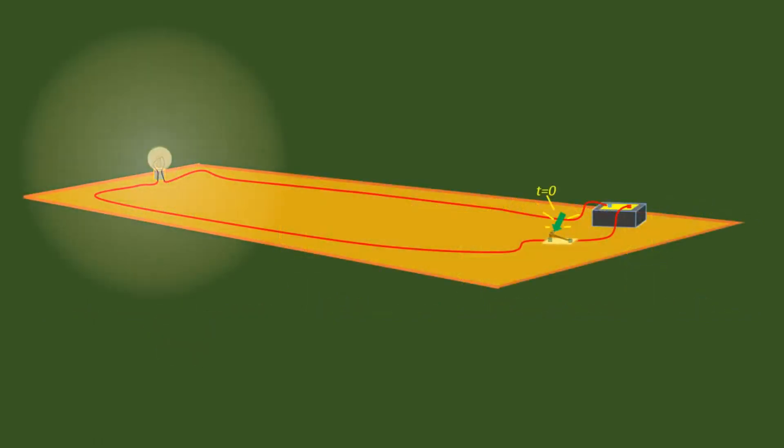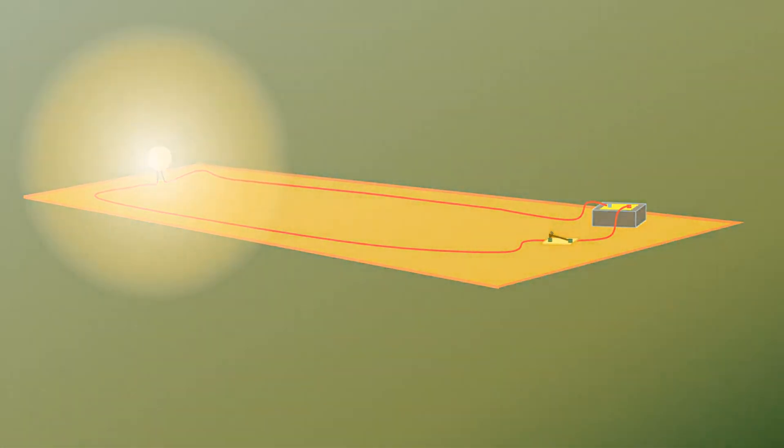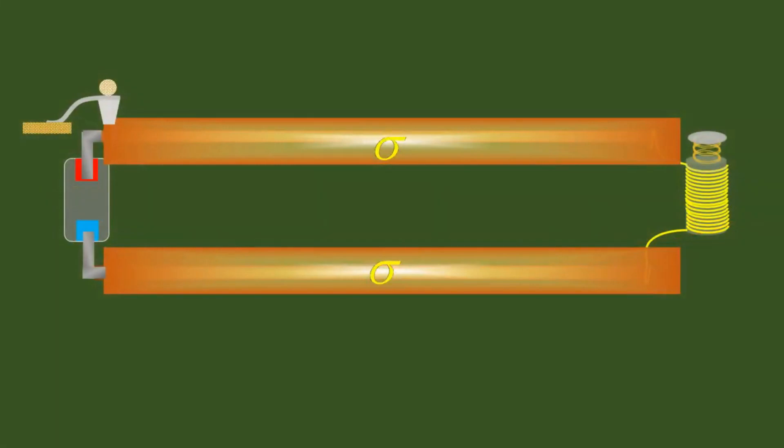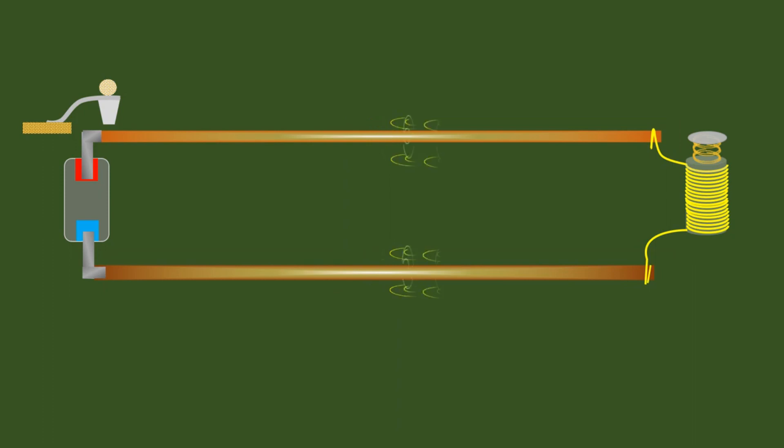We still do not answer the initial question, how does the energy reach the load in an electrical circuit? By an electromagnetic wave or by some other mechanism? If the propagation is carried out by an electromagnetic wave, does this wave advance through the conductor or through the space that surrounds it?